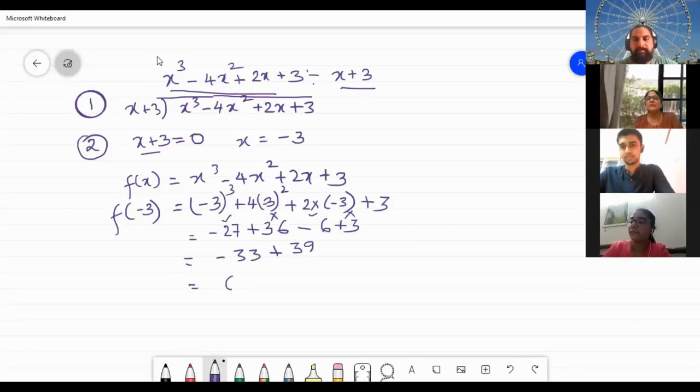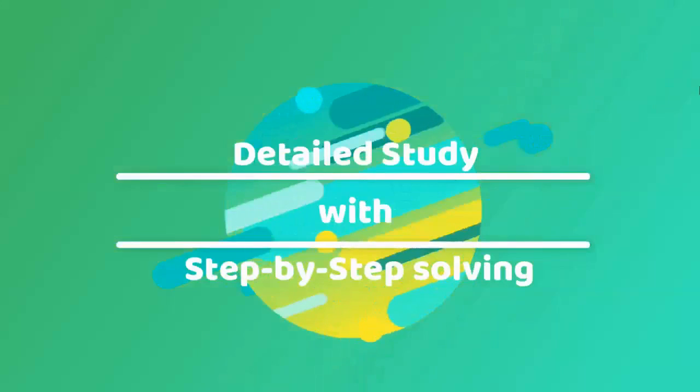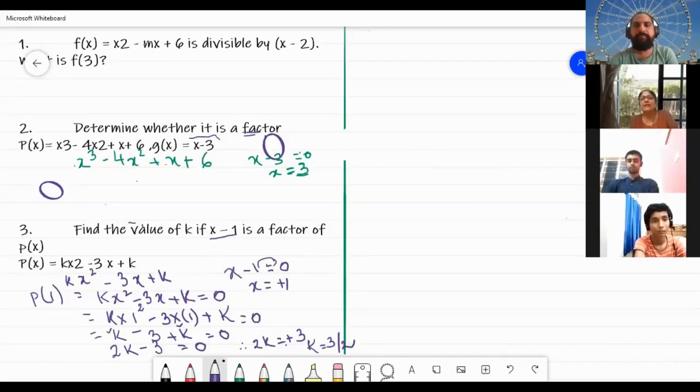What will be the answer? +6, right? So the remainder, and this is f(-3), this means remainder is equal to +6. Substitute the value of x.